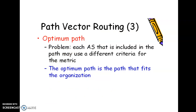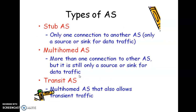We have discussed the four important characteristics: sharing, updating, loop prevention, and policy routing. The fifth characteristic is optimum path. Each AS included in the path may use different criteria for its metric. The optimum path is the path that fits the organization's goal. There are three different types of AS: Stub AS, which has only one connection to another AS; Multihomed AS, which has more than one connection to other AS; and Transit AS, which is a multihomed AS that allows transit traffic.